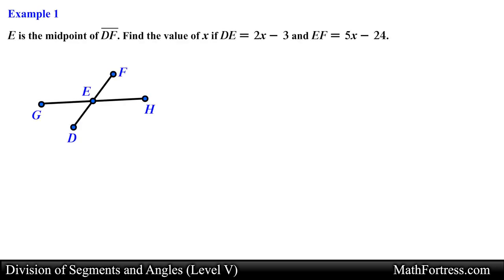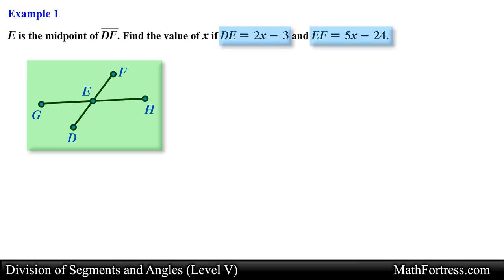Point E is the midpoint of segment DF. Find the value of x if the measurement of segment DE equals 2x minus 3 and the measurement of segment EF equals 5x minus 24. In this problem we are provided with a graph of two line segments intersecting at a common point, and we are given algebraic expressions for the lengths of the two line segments. We are asked to find the value of x.